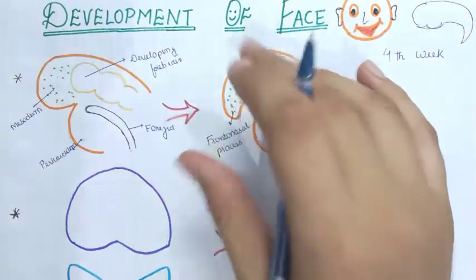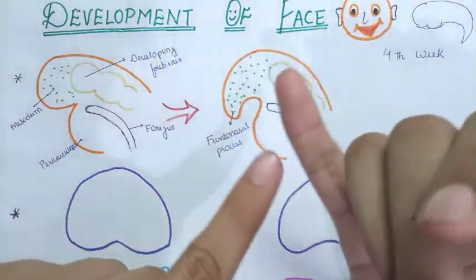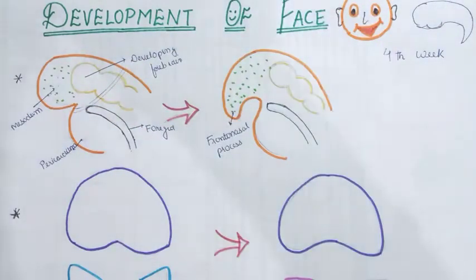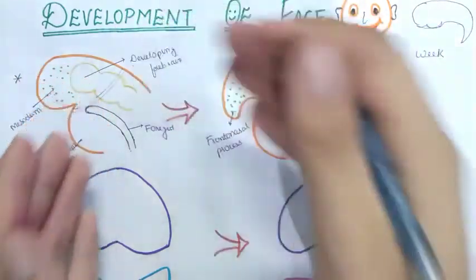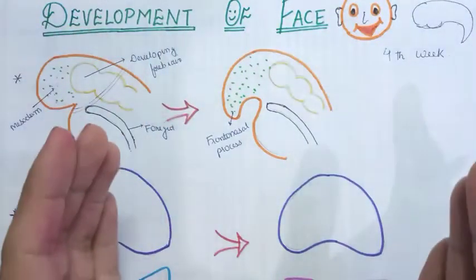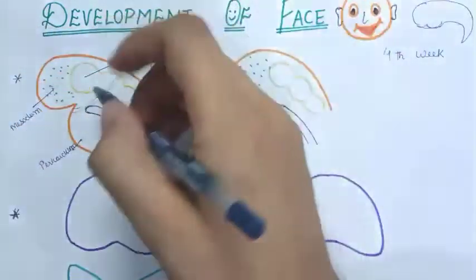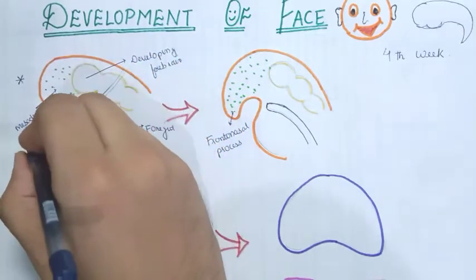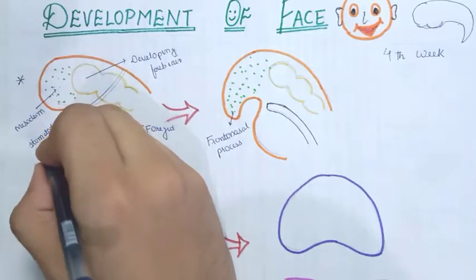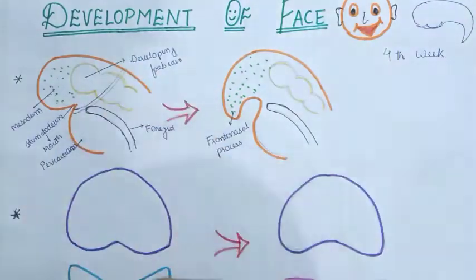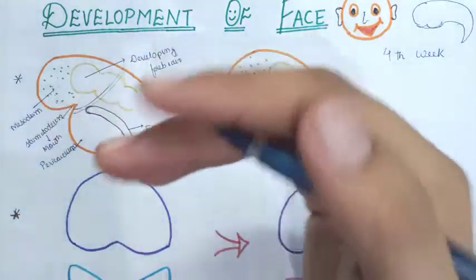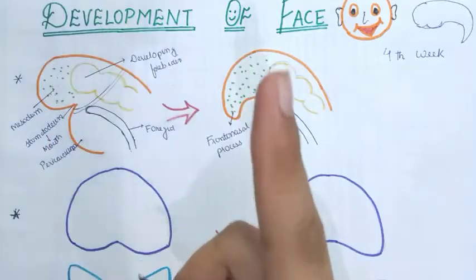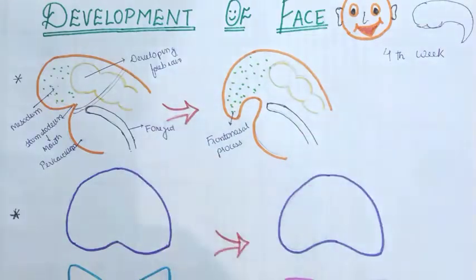By the fourth week we have a frontonasal process and some pharyngeal arches. Near the stomatodeum region we have arches called the pharyngeal arches or branchiopharyngeal arches. These arches extend from ventral to dorsal, meeting at the center. All structures of the face should develop from the structures lying around the stomatodeum. The nearest to the stomatodeum is the first branchiopharyngeal arch, which is also called the mandibular arch.